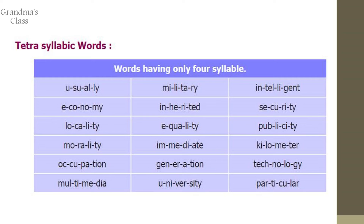Tetrasyllabic words have four syllables. Examples: intelligent, economy (E-CO-NO-MI), inherited. These are tetrasyllabic words with four syllables.